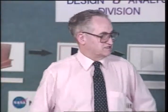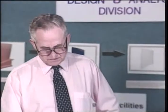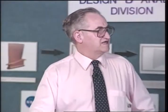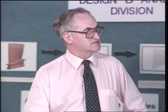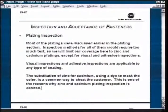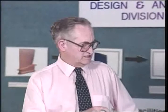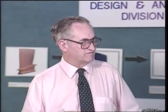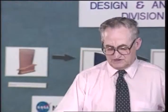Now plating inspection - this is another one of those that we talk about, and people don't do other than look at it and say, that's a gold color so it means it's got chromate in it and I don't see that it's gouged up too much, so I guess it's all right. We'll limit our coverage here to zinc and cadmium platings. The substitution of zinc for cadmium and using a dye to mask the color is a common way to cheat, and it's done a lot.